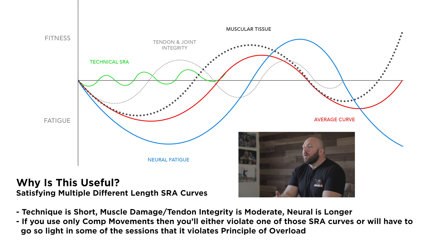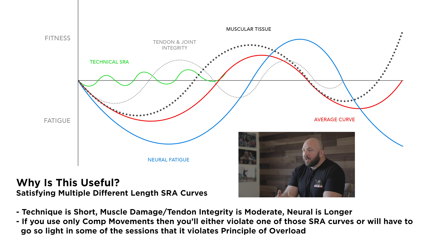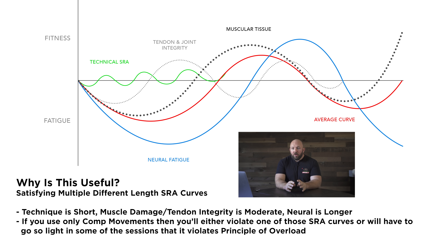We're going to use variation in exercise selection and loading strategy to better align the endpoints of those different SRA curves. The stronger you become as a lifter, the more necessary this strategy becomes — because the heavier the weights on the bar, the more stimulus you derive from a single session, and the more you're tapping into neural force production qualities to lift near career-peak weights. Your muscular and neural SRA curves get longer and longer. You can point to extreme examples like Konstantin Konstantinovs deadlifting every 14 days.